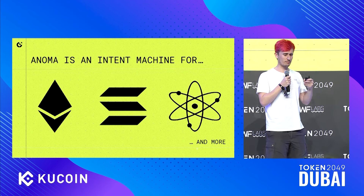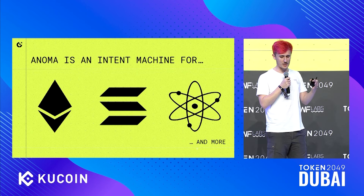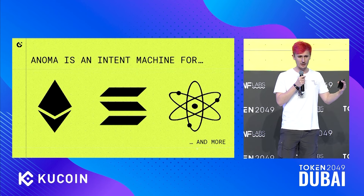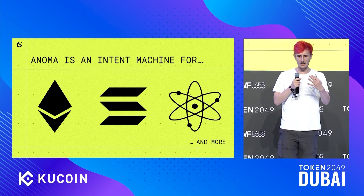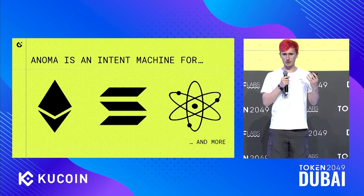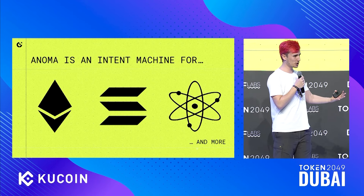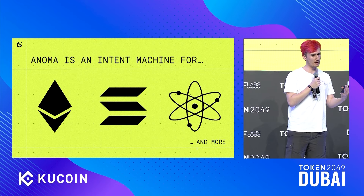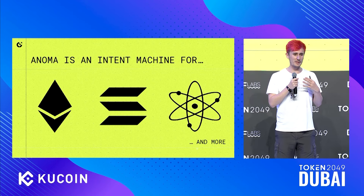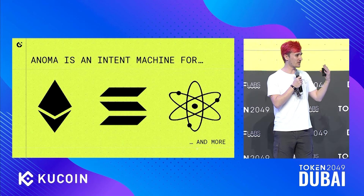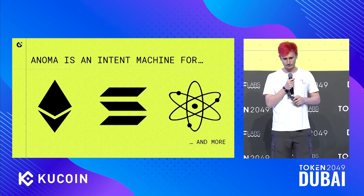But this generalizes. Anoma is an intent machine not only for Ethereum, but could also be an intent machine for Solana, Cosmos, Near — you name it. Any sufficiently programmable virtual machine is going to be capable of running Anoma as an intent machine.